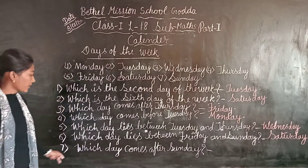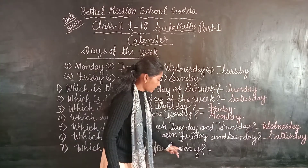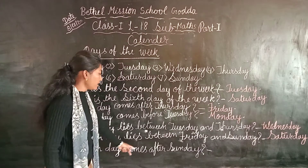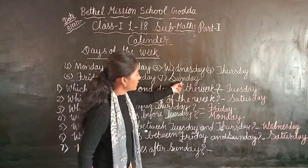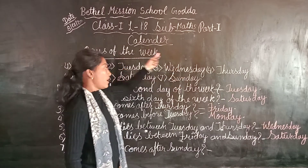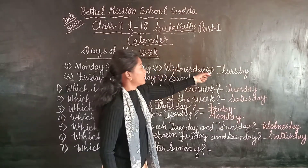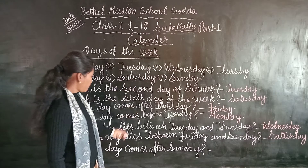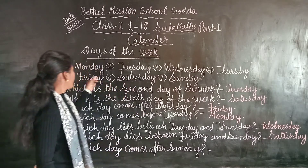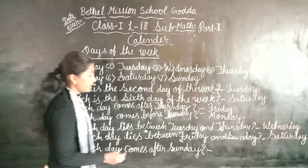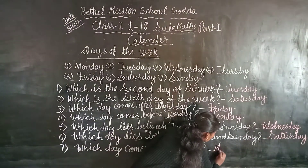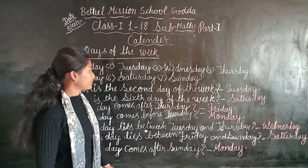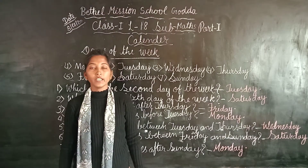Next, seventh question: which day comes after Sunday? After means Ke Baad. Which day comes after Sunday? We will repeat: Sunday, Monday, Tuesday, Wednesday, Thursday, Friday, Saturday, Sunday — yes, Monday. So which day comes after Sunday? Monday. We will write here Monday. Did you understand? That's all for today. Thank you.